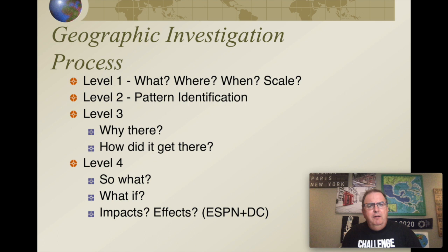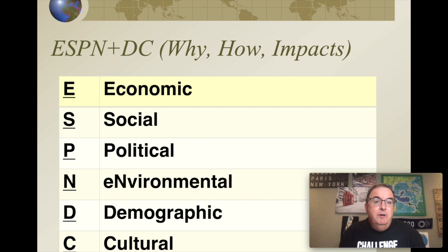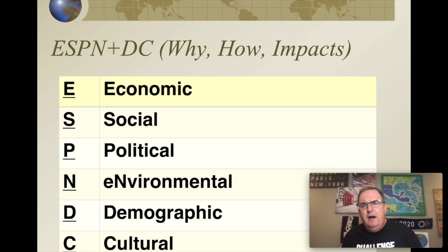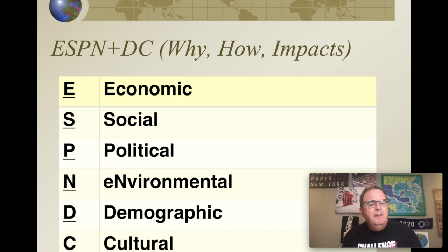This is four-level analysis. Make sure you know this, because whenever you see a map, you're going to use it and it will serve you well in your study of geography. Now, I mentioned ESPN DC — I'll do a whole video on it, but here's a quick intro. Economic: jobs, money, income. Social: the conditions in which people live. Political: government and laws. Environmental: relates to nature. Demographic: population statistics like density, birth rates, death rates. And cultural: beliefs, values, the conditions in which we live. You can use ESPN DC to answer questions of why, how, or the impacts.